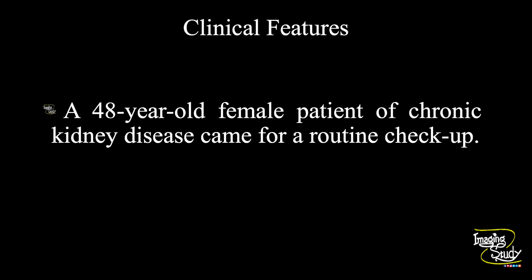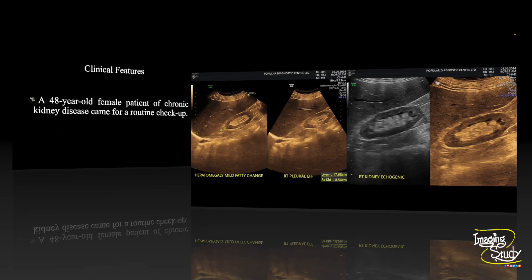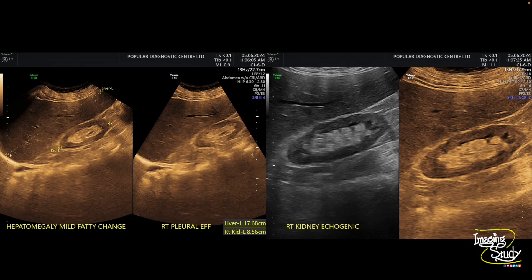A 48-year-old female patient with chronic kidney disease came for a routine check-up. Let's see what we have got on ultrasound. Here I'm going to show you the picture of the liver and right kidney. There was mild hepatomegaly with fatty change, which is not a concern in this case right now.